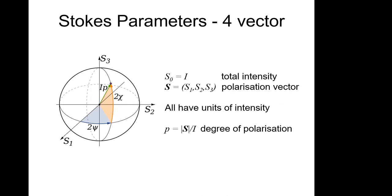Question: why is it two times psi in the Poincaré sphere? Because psi was only allowed to go from zero to 180 degrees — to get a full 360-degree rotation around the sphere you need that factor of two. Another way to say it is that from the perspective of the Poincaré sphere, the electric field is a spin-half quantity: if you rotate by 360 degrees in Stokes space you rotate by only 180 degrees in electric field space.